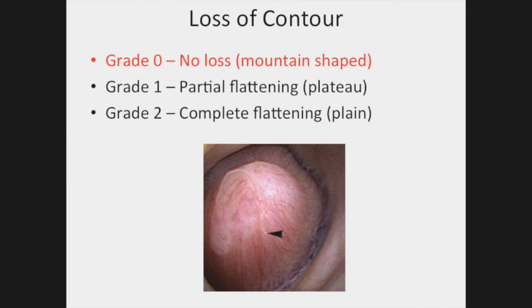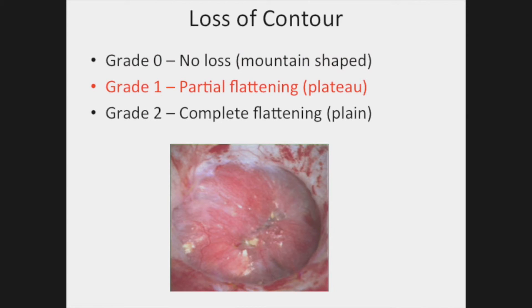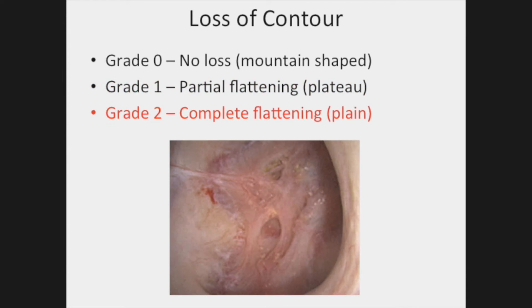Loss of contour is assigned a score based on the relative degree of papillary flattening. When the papilla exhibits its normal tall hill or mountain shape, it is assigned a score of zero. When the papilla has partial loss of contour, it is assigned a score of one. If the papilla is completely flat relative to the surrounding tissue, it is assigned a score of two.